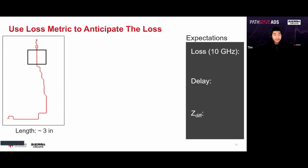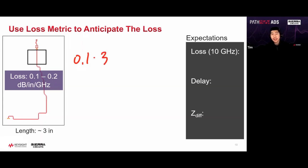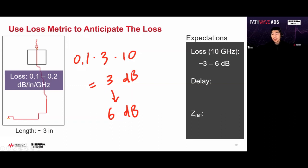I did a quick calculation on the length — it's about three inches. The loss metric we're going to use today is 0.1 to 0.2 dB per inch per gigahertz. At 10 GHz: 0.1 × 3 inches × 10 GHz = 3 dB, and 0.2 × 3 × 10 = 6 dB. So we'll expect 3 to 6 dB of loss at 10 GHz.